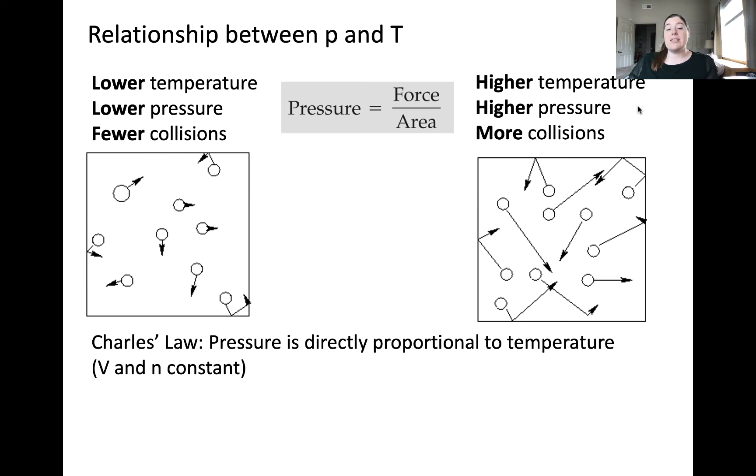We can express this as a proportionality also, that pressure is directly proportional to temperature. What this means is that if pressure increases, temperature would also be predicted to increase, assuming all other variables are constant. This can be expressed as P1 over T1 is equal to P2 over T2, again where one are the initial conditions of the system and two are some later final conditions.